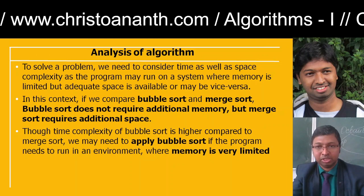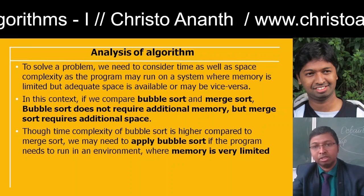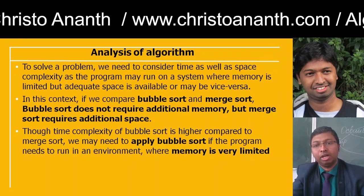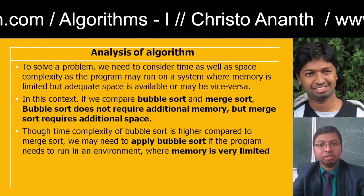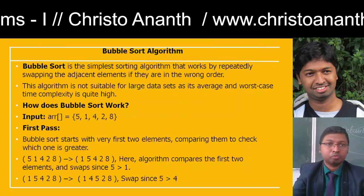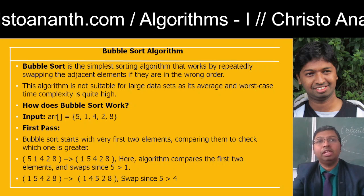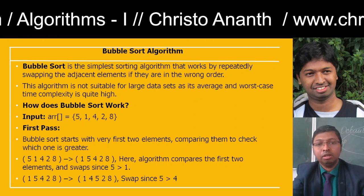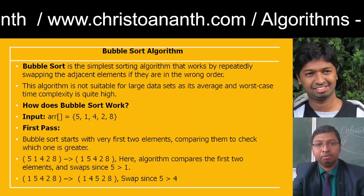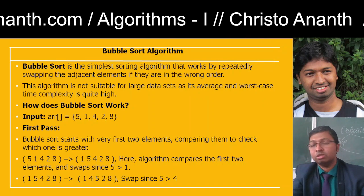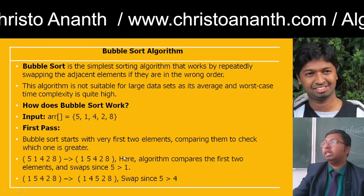The time complexity of bubble sort is much higher because it does not require any additional memory. We should apply bubble sort if we have to run the algorithm where memory is actually limited, because it does not require additional memory though the time complexity is more. Bubble sort is a very simple sorting algorithm. For an input array of 5, 1, 4, 2, 8, for the first two elements it will check which one is greater — whether 5 is greater or 1. Since 1 is smaller than 5, it sorts them: 1, 5, then 4, 2, 8 remains the same.